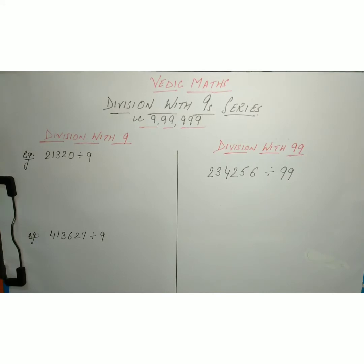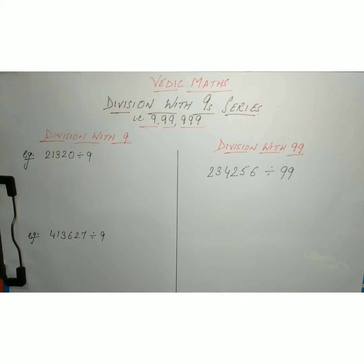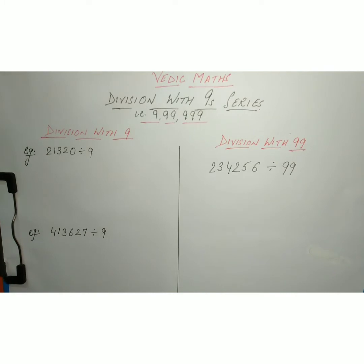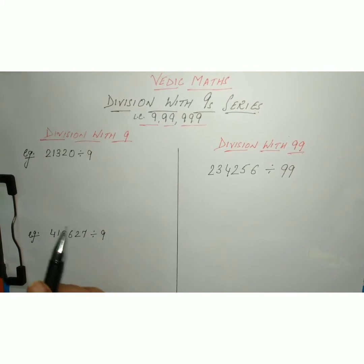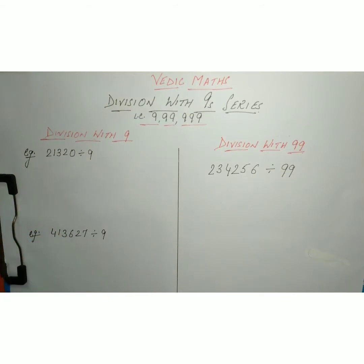Hello everyone. Today we will be learning a new magical trick: division with the nine series. That is, we can divide any number by 9, 99, 999, or any number of nines in just a single step. Let us learn how we do that with some examples, starting with division by 9.